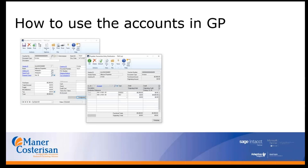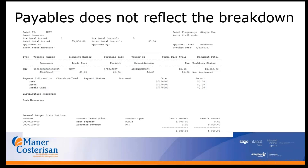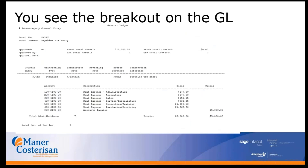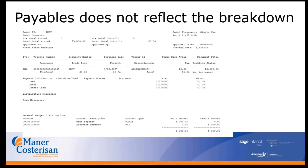Here's how to use fixed and variable allocation accounts within GP. You open up your transaction entry and when you click on distributions, you enter the actual GL account — that single line. If you try to print your batch edit list in payables or any other module, you won't be able to see the breakdown of the distributions. It's only on the GL side that you see the breakout between the different departments.